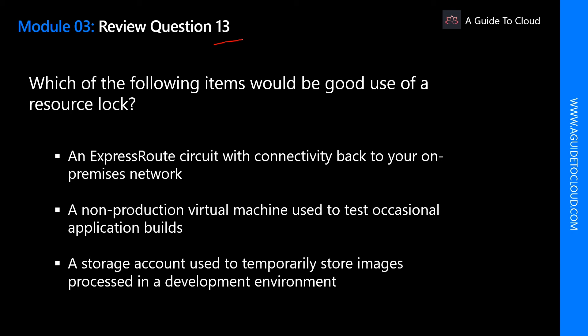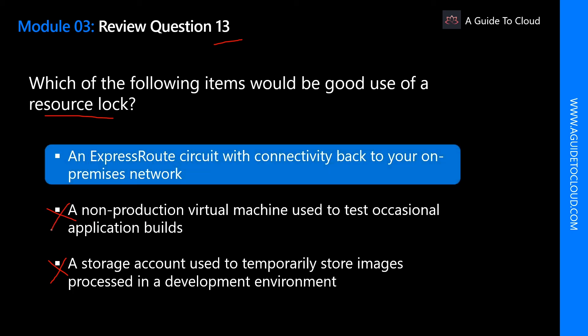Which of the following items would be a good use case for a resource lock? A storage account used to temporarily store images processed by a development environment — no, because it's temporary. A non-production virtual machine used to test occasional application builds — no, because it's non-critical. The right answer is an ExpressRoute circuit with connectivity back to your on-premises environment, because it's a critical network connecting your on-premises and Azure environments. You would put a resource lock so that nobody can accidentally modify or delete it.